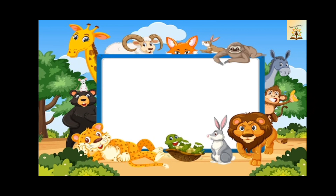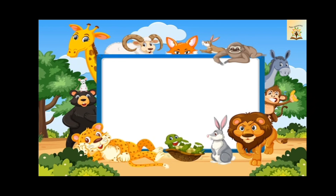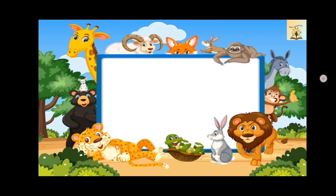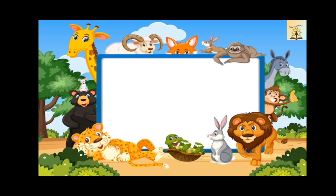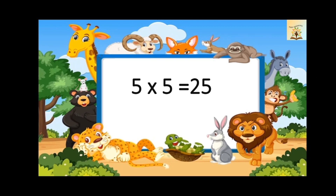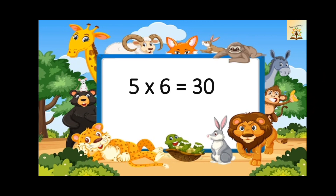Table of five. Five ones are five. Five twos are ten. Five threes are fifteen. Five fours are twenty. Five fives are twenty-five. Five sixes are thirty.